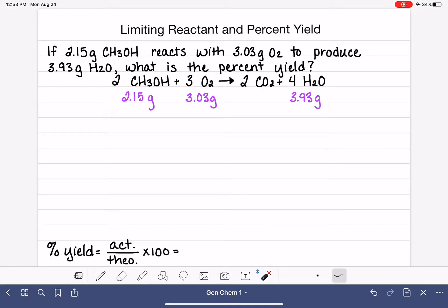In this problem, we have the quantities of our reactants. One of these reactants is the limiting reactant. We don't know which one is limiting. That's going to be part of the problem, figuring that out. And then we also have this 3.93 grams, and this is the actual yield for our product.